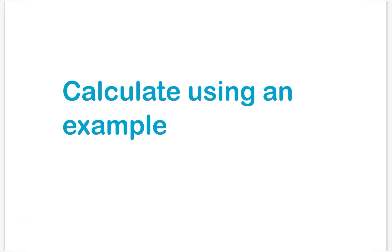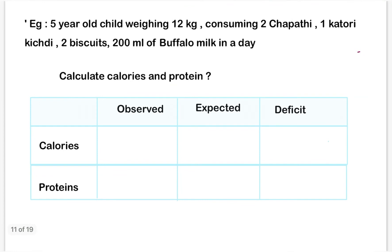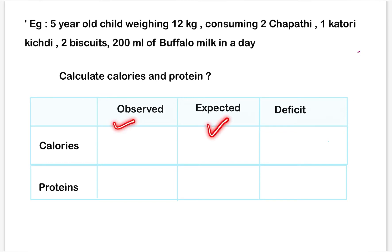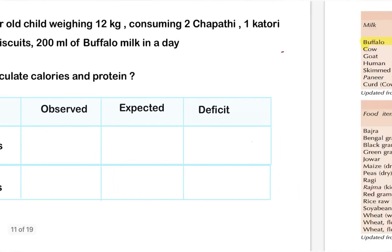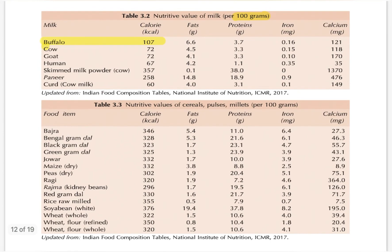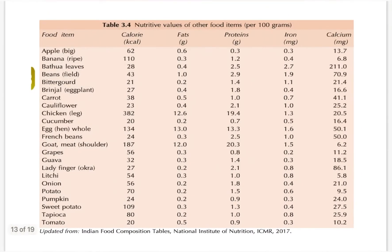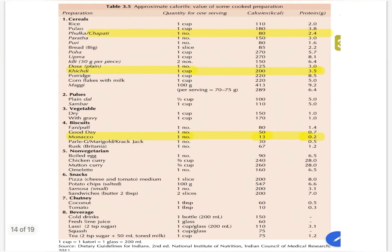Now we will calculate expected calories, observed calories, and protein using an example: a 5-year-old child weighing 12 kg consuming 2 chapatis, 1 katori of kichdi, 2 Monaco biscuits, and 200 ml of buffalo milk in a day. We have to calculate the calories and proteins, then make a table with observed values, expected calories and proteins, calculate the deficit, and give our inference. These are charts showing the calorie and protein content of various common food products.